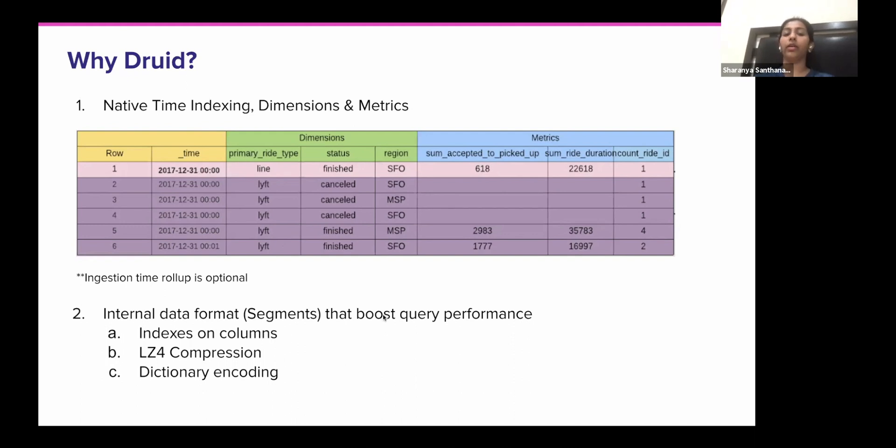So this is an example of some ride data at Lyft and what Druid also supports is ingestion time rollup. So basically as you're ingesting data, it can roll up the data on the granularity that you choose, but that is totally optional. You need not use that feature.